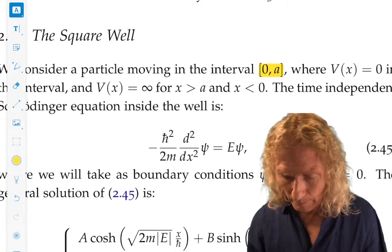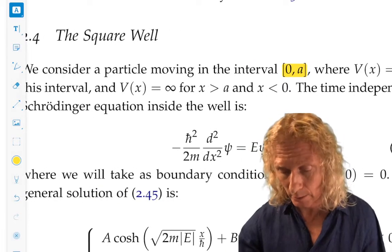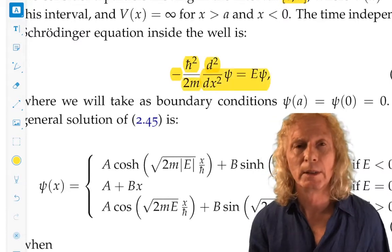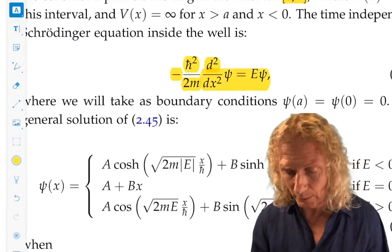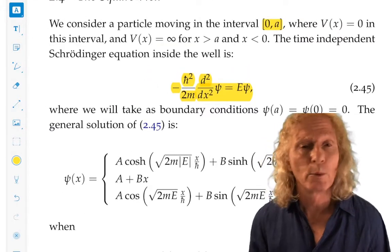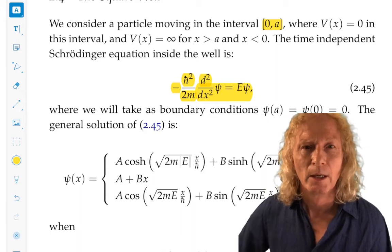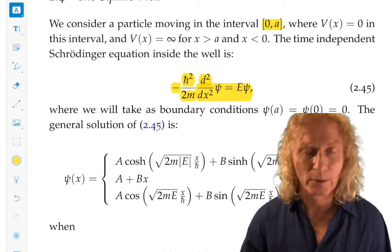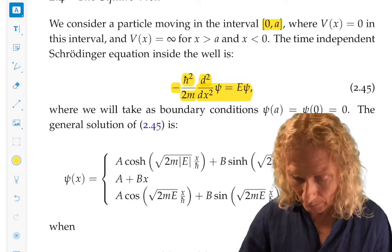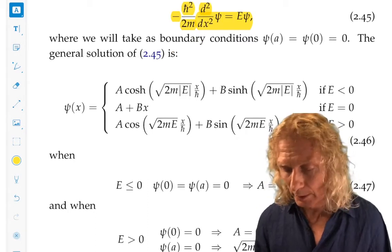Alright, so the time-independent Schrödinger equation for the square well in that interval, zero to a, is given by this equation, 245, and we can solve that equation. Forget about the distracting-looking constants, you solve this equation the first year when you did ODEs, elementary ODEs.